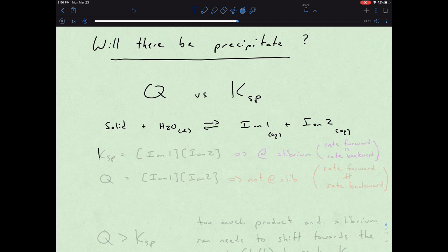So for our notion of Ksp, that's equal to our ion 1 times our ion 2. But that's also with Q.